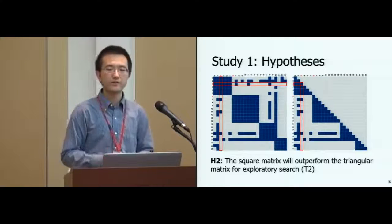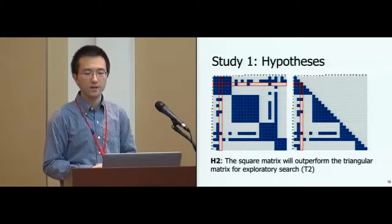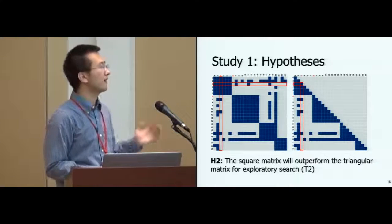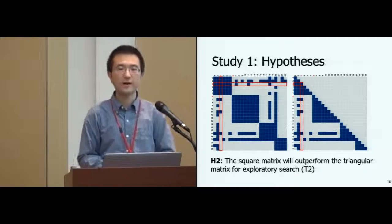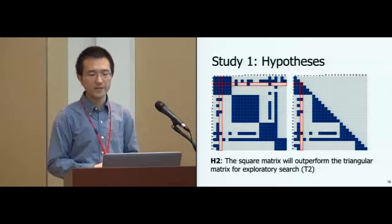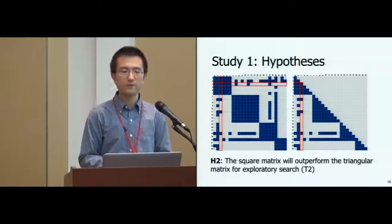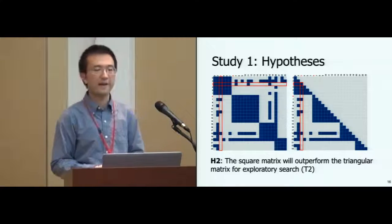Second, to view the neighbors of a given node, one can scan through the rows or columns in the square matrix by following an L-shaped path in a triangular matrix. We expect that following a straight line in rows or columns will have better user performance than following an L-shaped path.